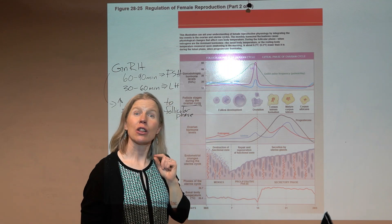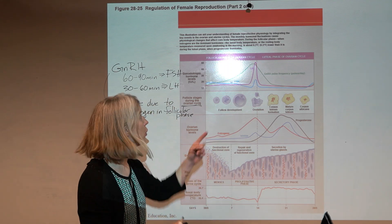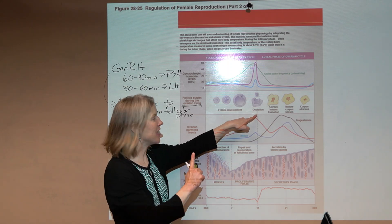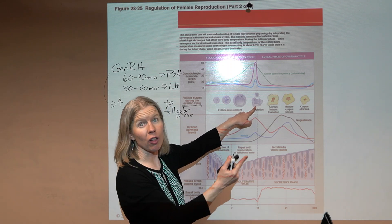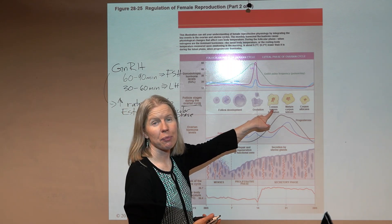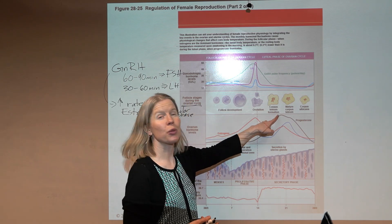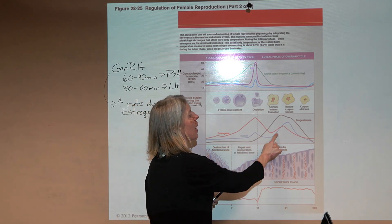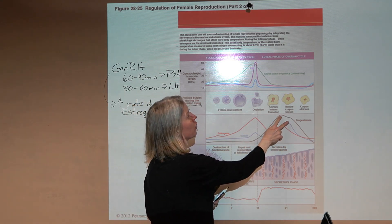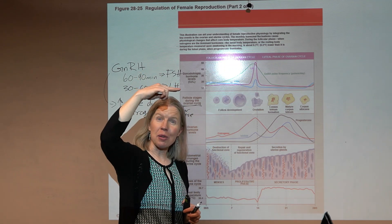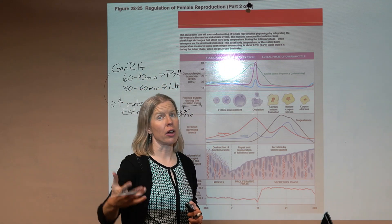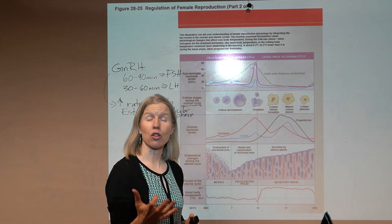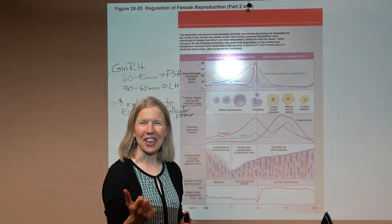The increased GnRH pulse rate causes a surge in luteinizing hormone. That LH surge causes ovulation, and the degraded follicle becomes the corpus luteum. The corpus luteum produces progesterone and inhibin — both of which provide negative feedback on GnRH and follicle stimulating hormone.